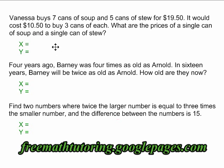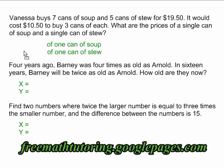The first example has Vanessa buying seven cans of soup and five cans of stew for $19.50. It would cost $10.50 to buy three cans of each. What are the prices of a single can of soup and a single can of stew? I have decided to define my x and y as the price of one can of soup and the price of one can of stew.